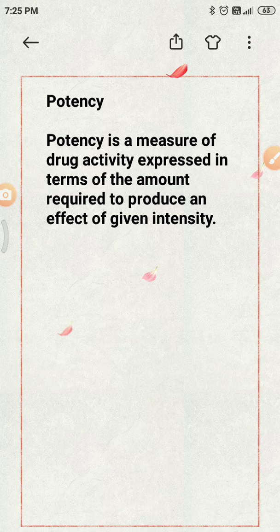Potency usually depends upon affinity and efficacy. Affinity is the attachment of the drug with the receptor. Efficacy describes how well a response is given after the attachment of the drug with the receptor. The response given for a drug is the effect of the drug on our body, and this effect depends on both the binding of the drug with the receptor and the efficacy.